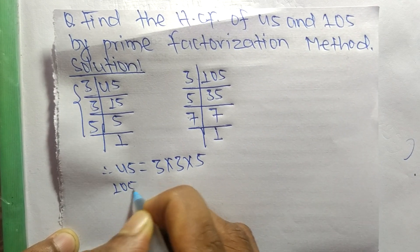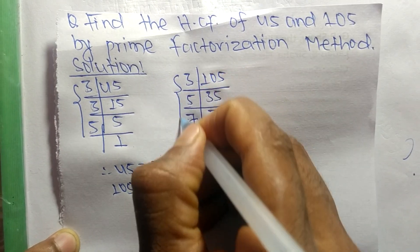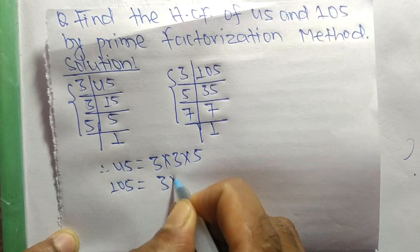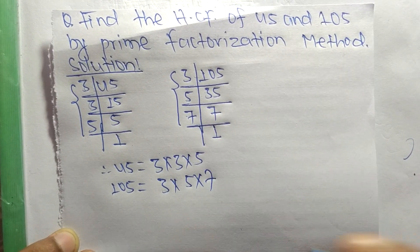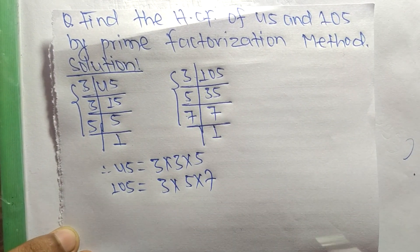Similarly, 105 equals 3 times 5 times 7. Now we select the common factors.